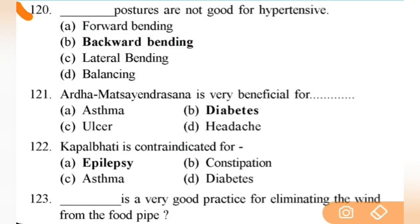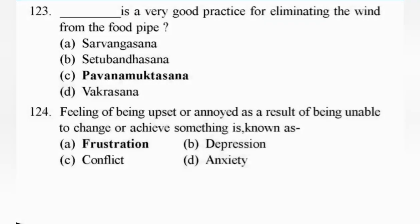Backward bending postures are not good for hypertensive people. Next: Ardha Matsyendrasana is very beneficial for diabetes. Next: Kapalabhati is contraindicated for epilepsy. Next: a very good practice for eliminating wind from the wind pipe is — right answer is C — Pavana Muktasana.